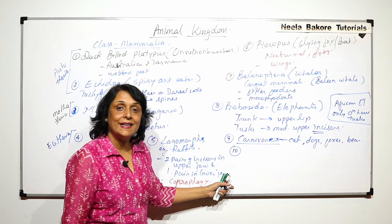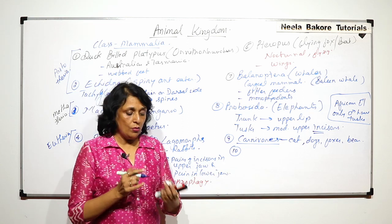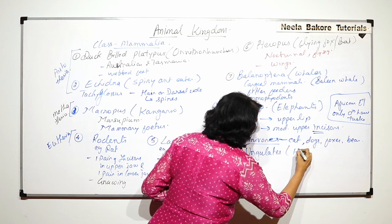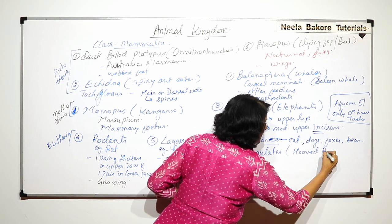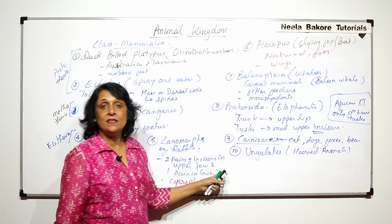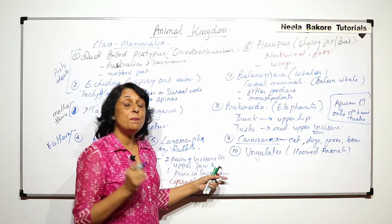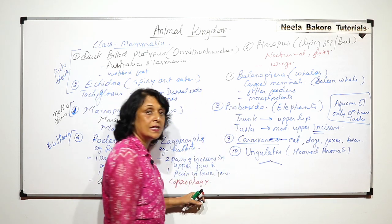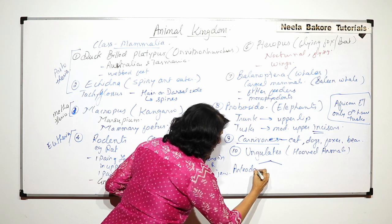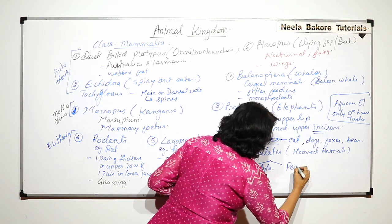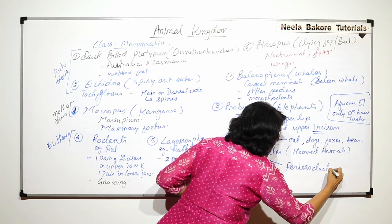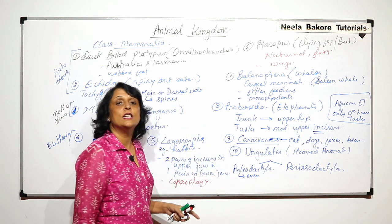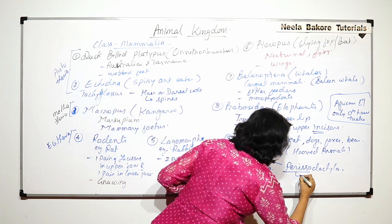Now coming to one more category, we can call them ungulates. Ungulates are animals which are having hooves. Like we have nails, these animals have hooves. And depending upon the number of digits which are functional, they can be of two categories: Artiodactyla and Perissodactyla. Artiodactyla—artio means even and dactyla is for digits or toes. And periso means odd, and dactyla again means the digit or the toes.